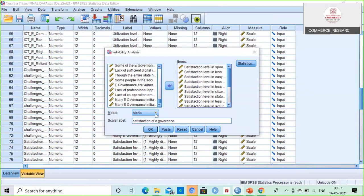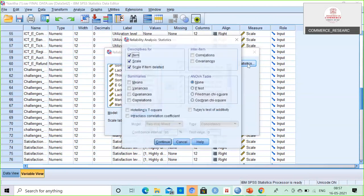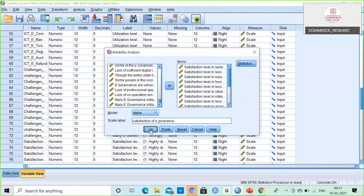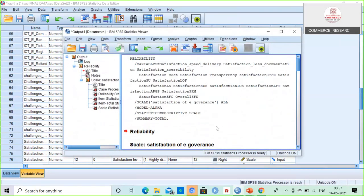This is model alpha. There are many other models we can have, but we are popularly using alpha, Cronbach alpha. Split half is there, Gutmann is there, Parallel is there, Strict parallel is there, but we are using alpha. The scale label is satisfaction of e-governance. And the statistics, you can take item scale and scale if items deleted. All the things are needed. You can click continue.